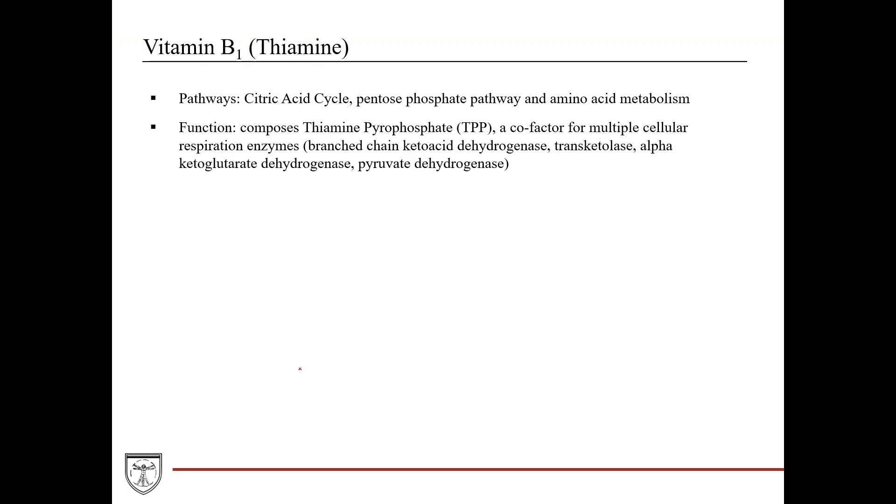First, vitamin B1, also known as thiamine. It's an important cofactor for reactions within the citric acid cycle, the pentose phosphate pathway, specifically the transketolase enzyme, and amino acid metabolism, specifically branched-chain alpha-ketoacid dehydrogenase. Its function is that it composes the thiamine pyrophosphate cofactor, which is used for multiple cellular respiration enzymes.